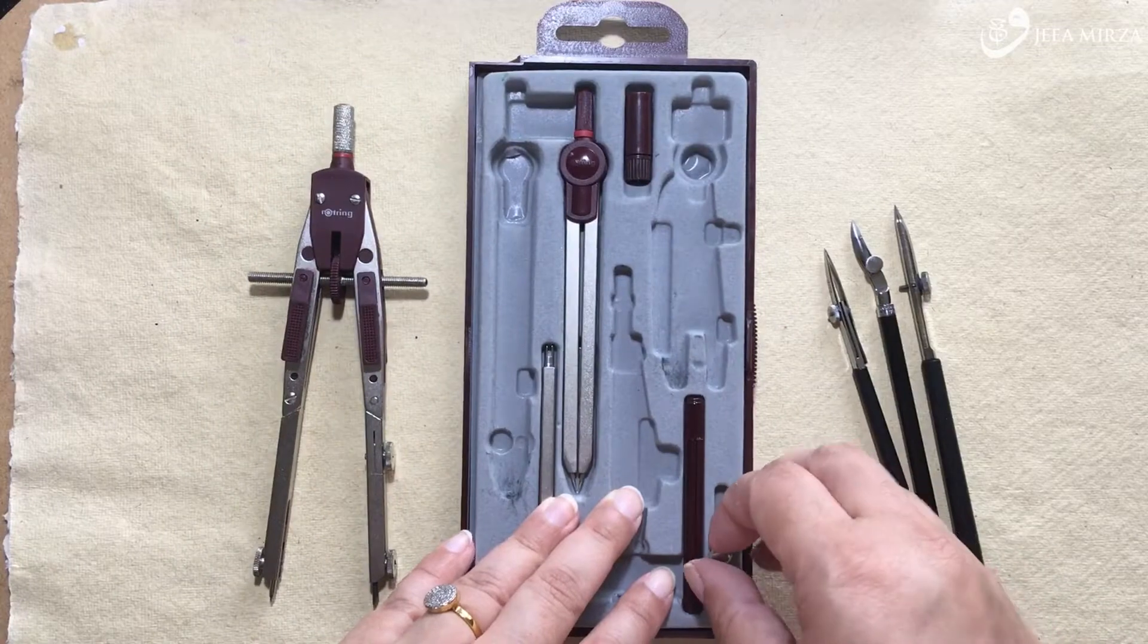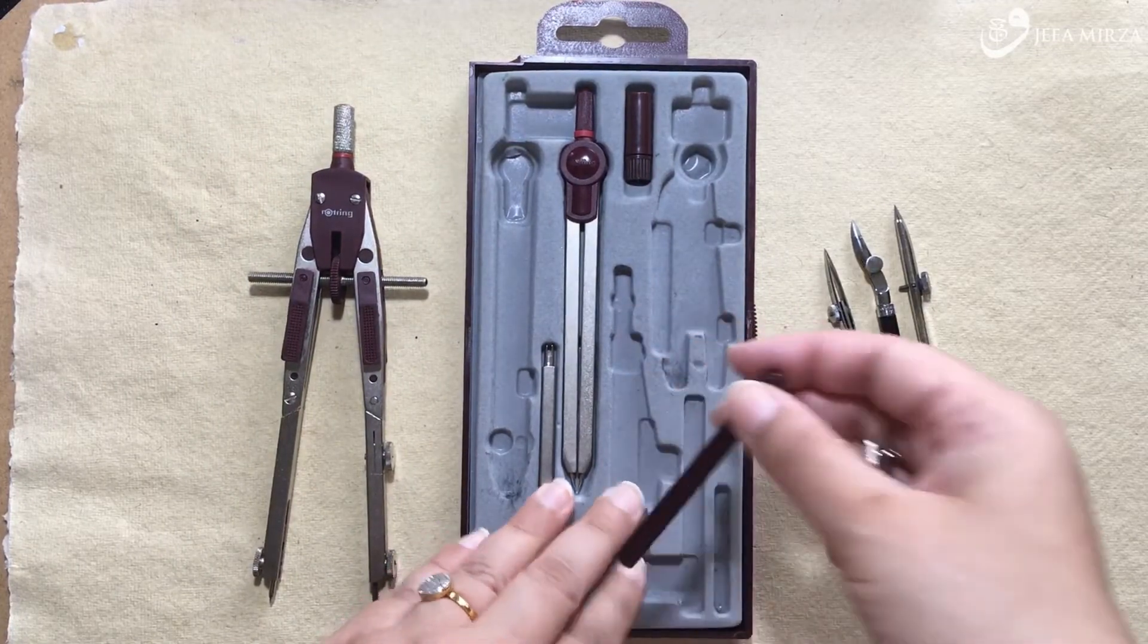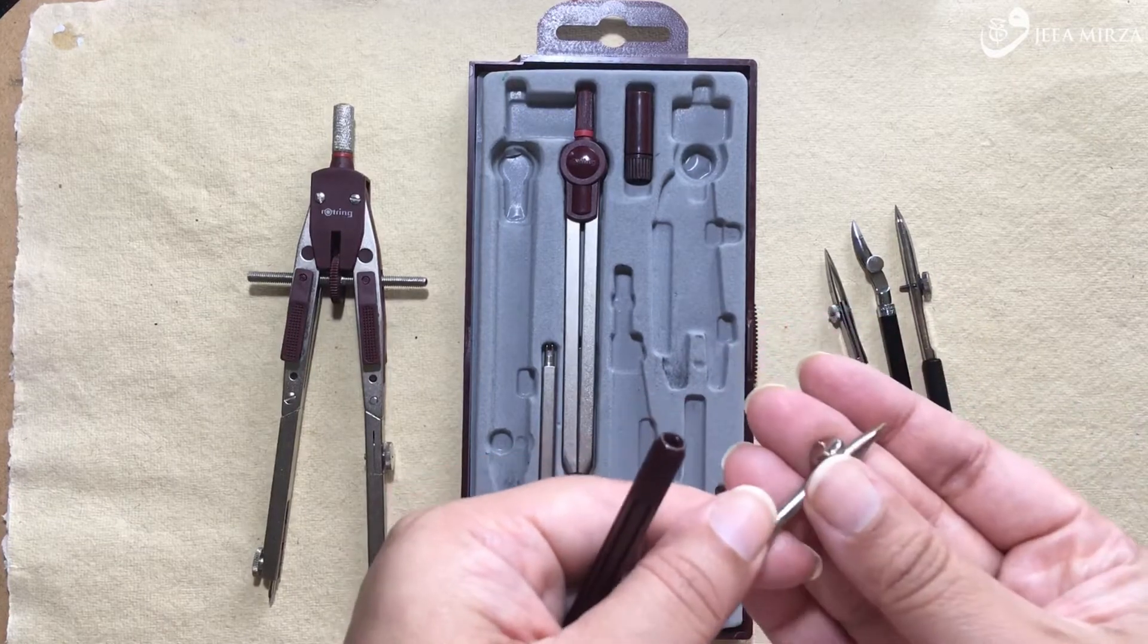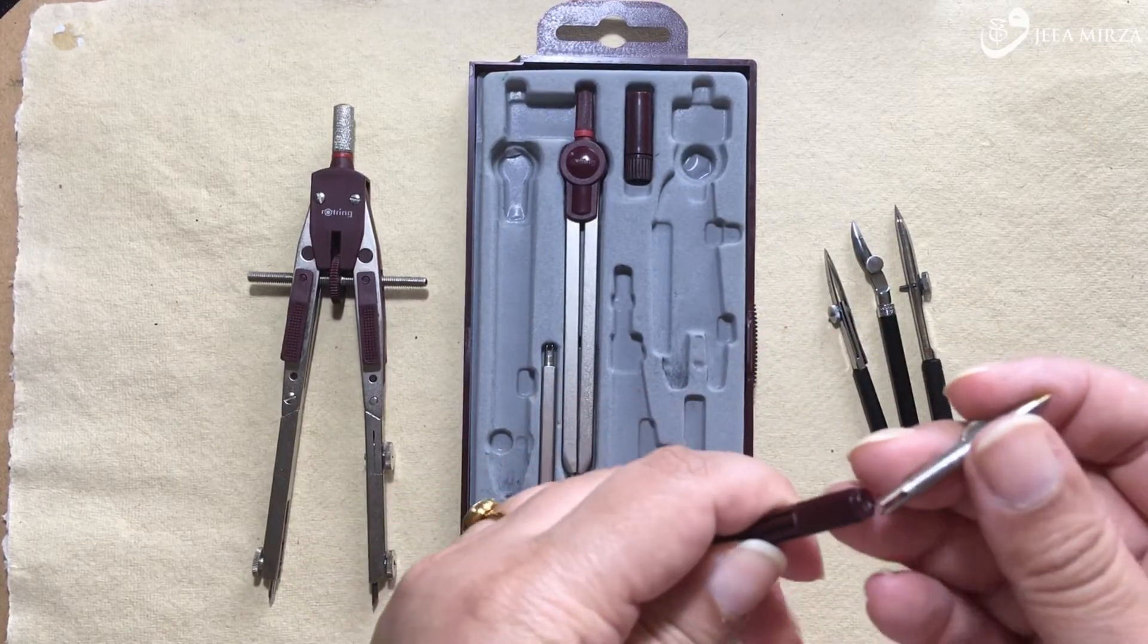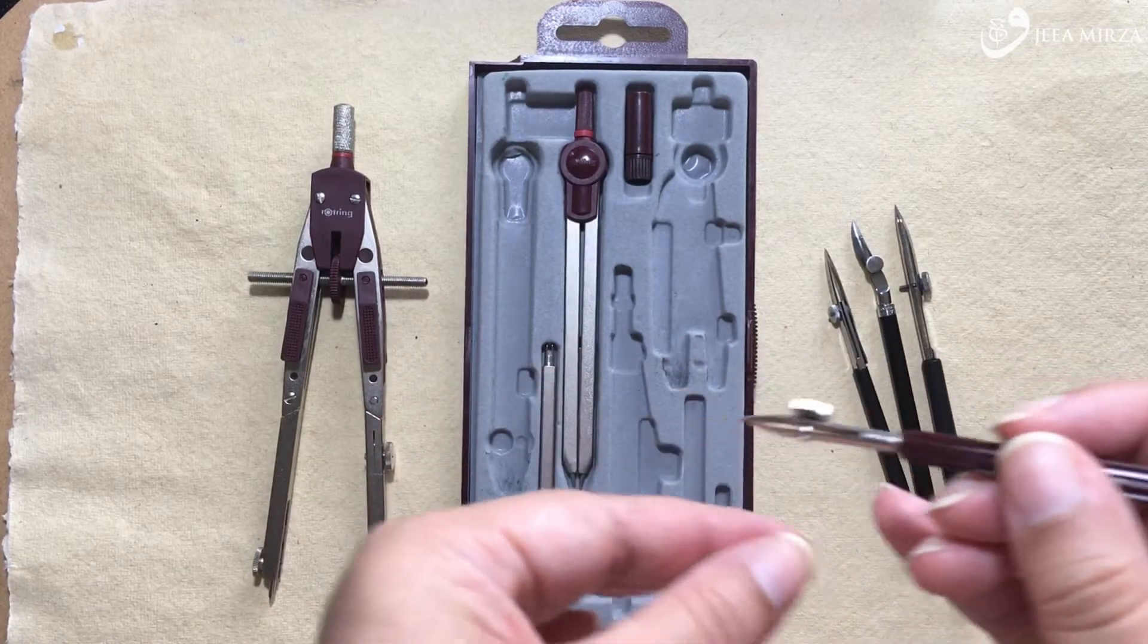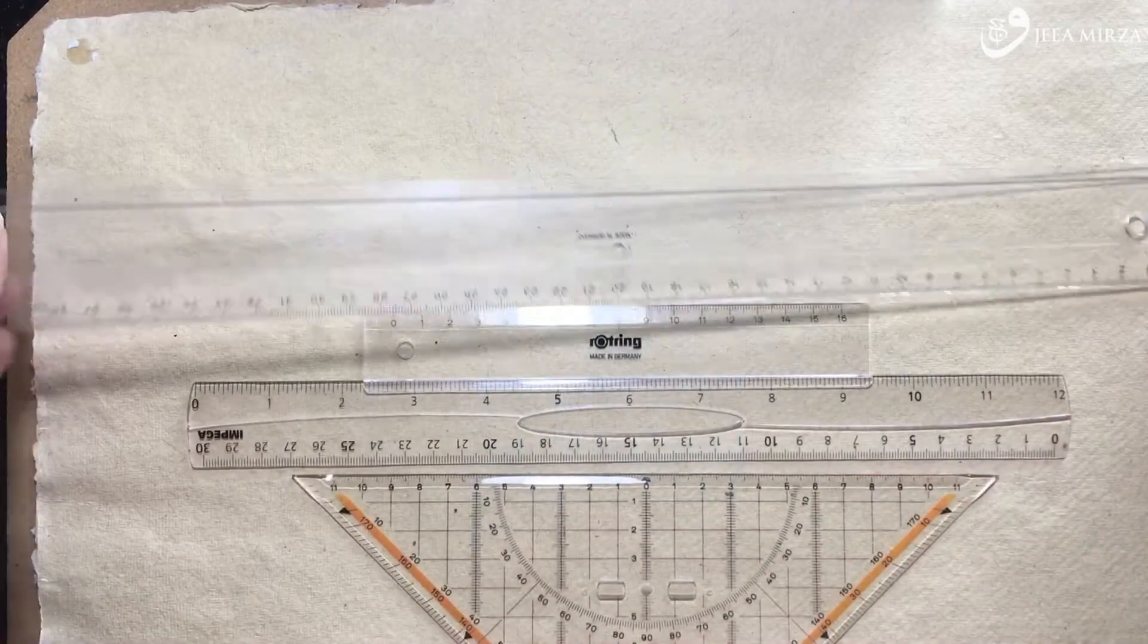Before we move on, I just wanted to point out you may well have a ruling pen yourself and haven't realised it because they often come with these modern sets that you buy. This is just an example of one from Rotring that came with a set of compasses that I bought a while ago.